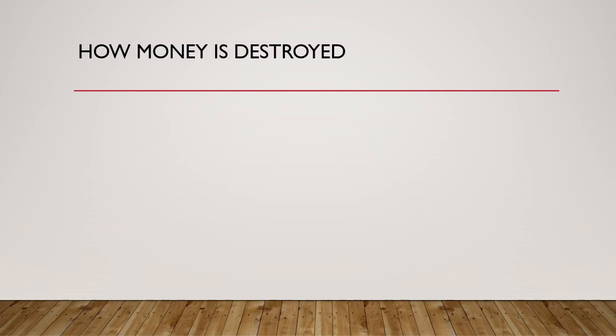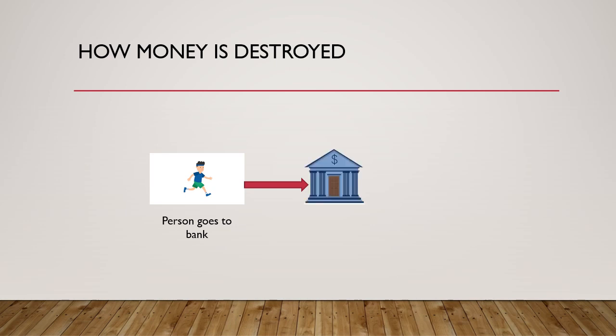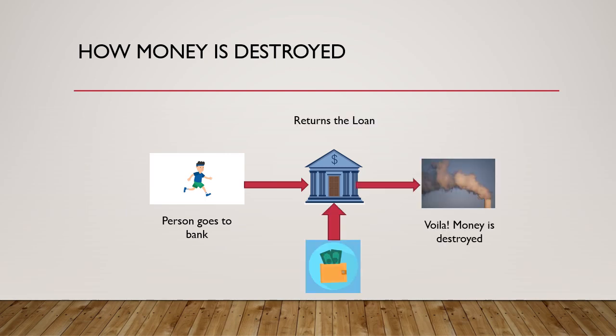Let's see why deflation happens. Deflation happens because there is a decrease in money supply. In a simple case, if a person doesn't see much demand for his goods and products, he gives the loan back to the bank. Just as easily as money was created out of thin air by the banks, this money is also destroyed. If more and more people start doing this, deflation can happen in the economy.